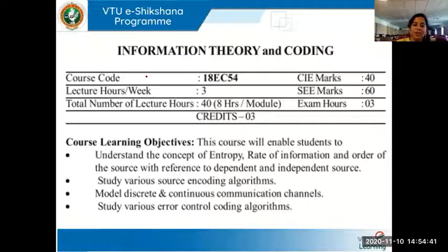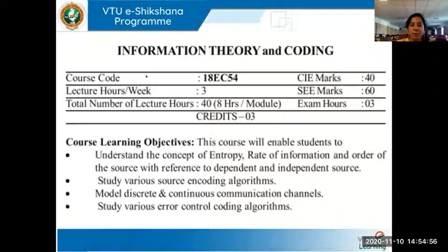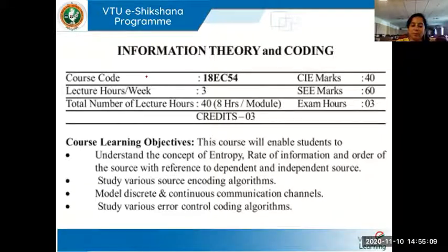Information Theory and Coding, as per our current syllabus, has 40 hours of total teaching and three credits. The learning objectives are to understand the concept of entropy, rate of information, and order of the source with reference to both dependent and independent sources; to study various source encoding algorithms to model discrete and continuous communication channels; and to study the various error control coding algorithms.